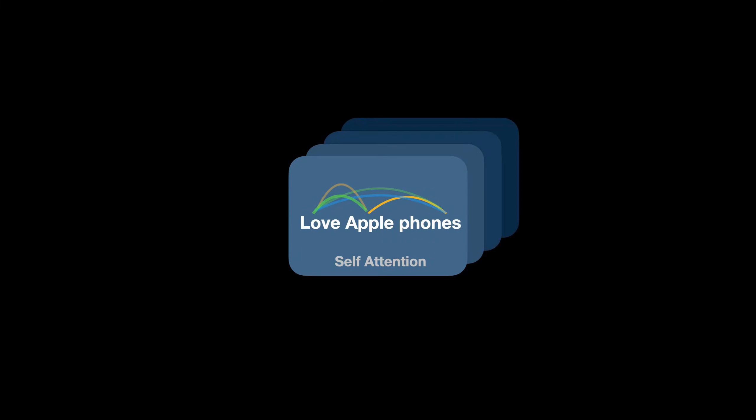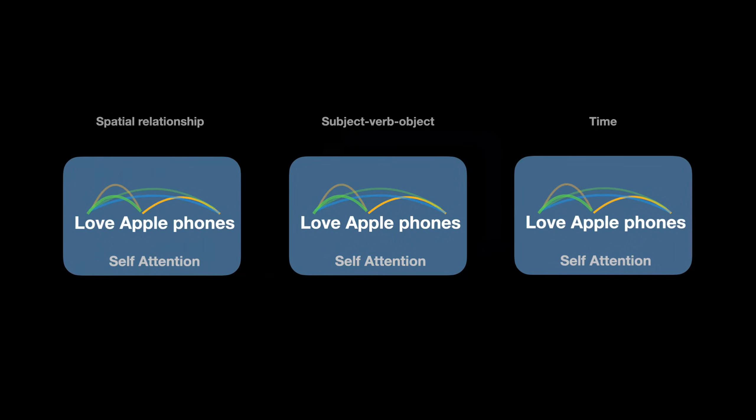A single head of attention is just like one RAM module. It focuses on capturing certain patterns or relationships in the sentence, like identifying the subject or tracking the meaning of a word in context. But as the complexities of the language increase — its full nuances, long-range dependencies, and layered meanings — they cannot be captured effectively by a single-headed attention. With multi-headed attention, each head specializes in a specific part of a sentence or a type of relationship. One attention head might identify spatial relationships, another subject-verb-object relationships, another temporal relationships, or another an altogether different interpretation.